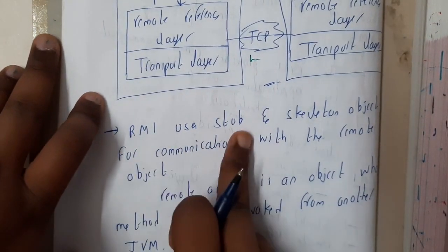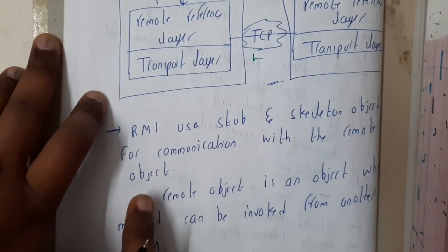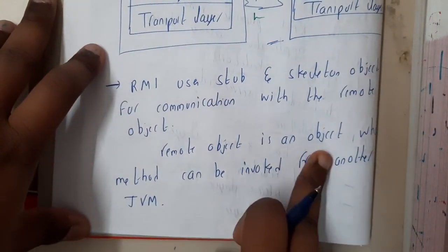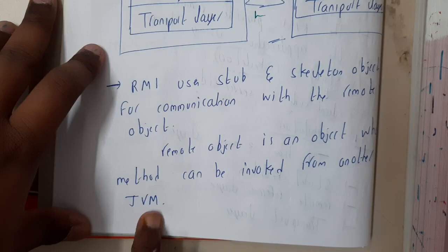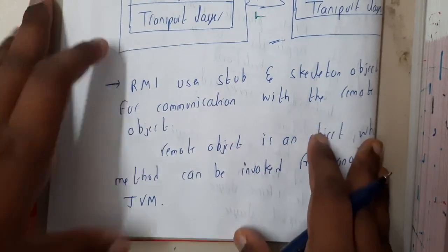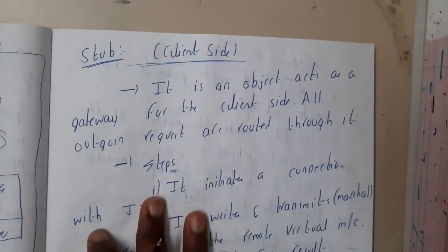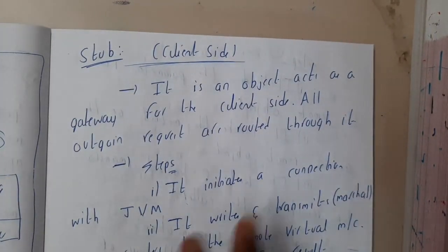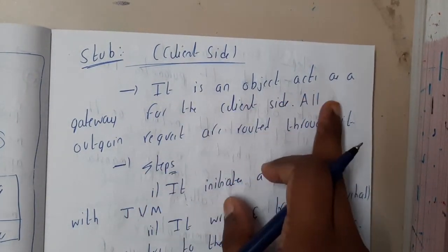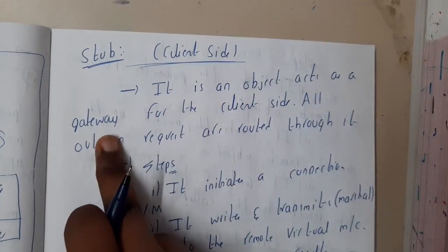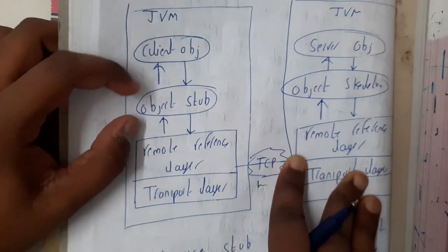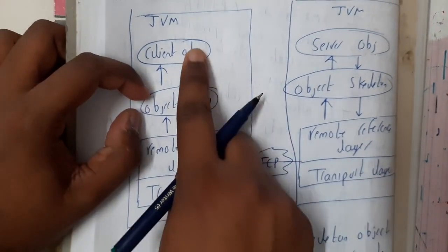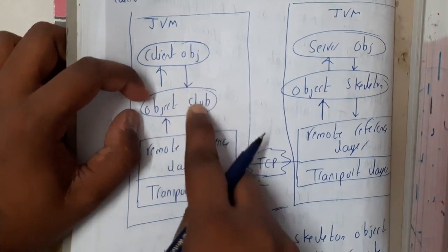RMI uses stub and skeleton objects for communication with remote objects. A remote object is an object whose method can be invoked from another JVM — one JVM can invoke methods on another. Now, the stub is on the client side. It acts as a gateway from the client side; all outgoing requests are routed through it. It is a mediator between all the layers, so whatever the user sends must pass through the stub to reach the other end.